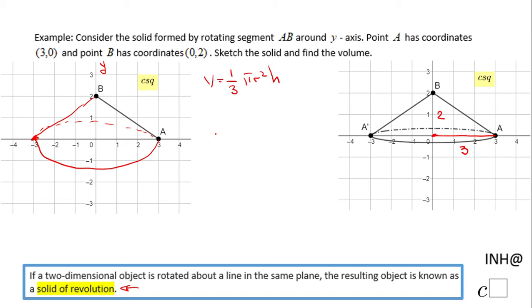So we're going to plug these two values in, and we have 1/3 π, the radius is 3, 3 squared, times the height 2. And now we're going to do some simplification. The first thing, 3 squared, which is 9.